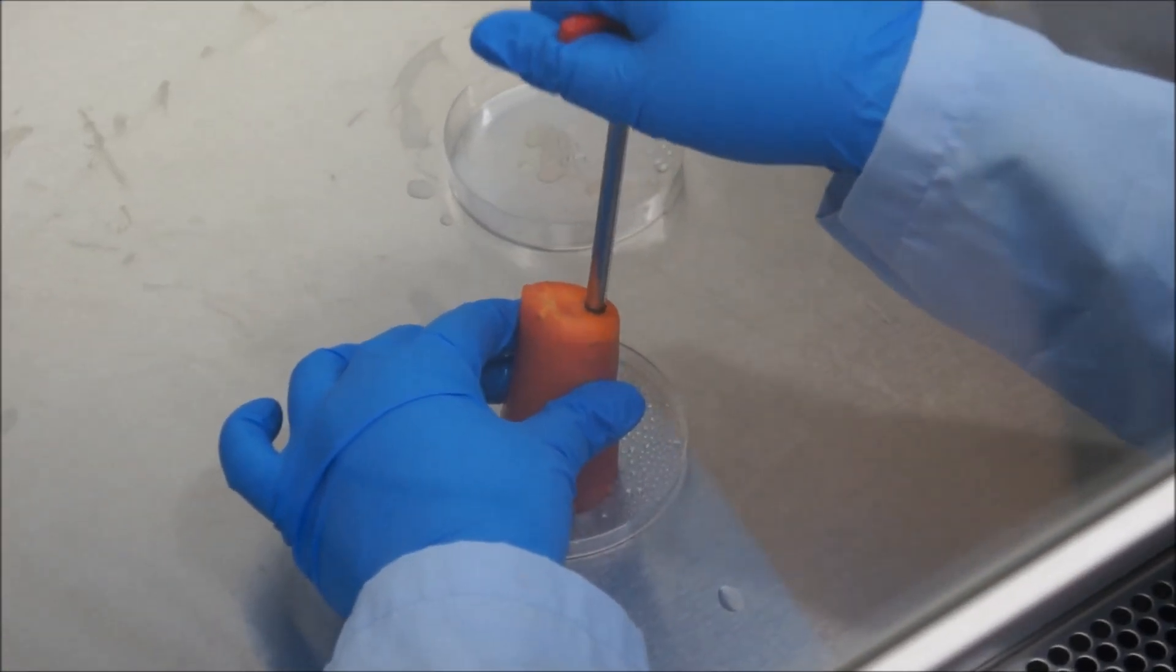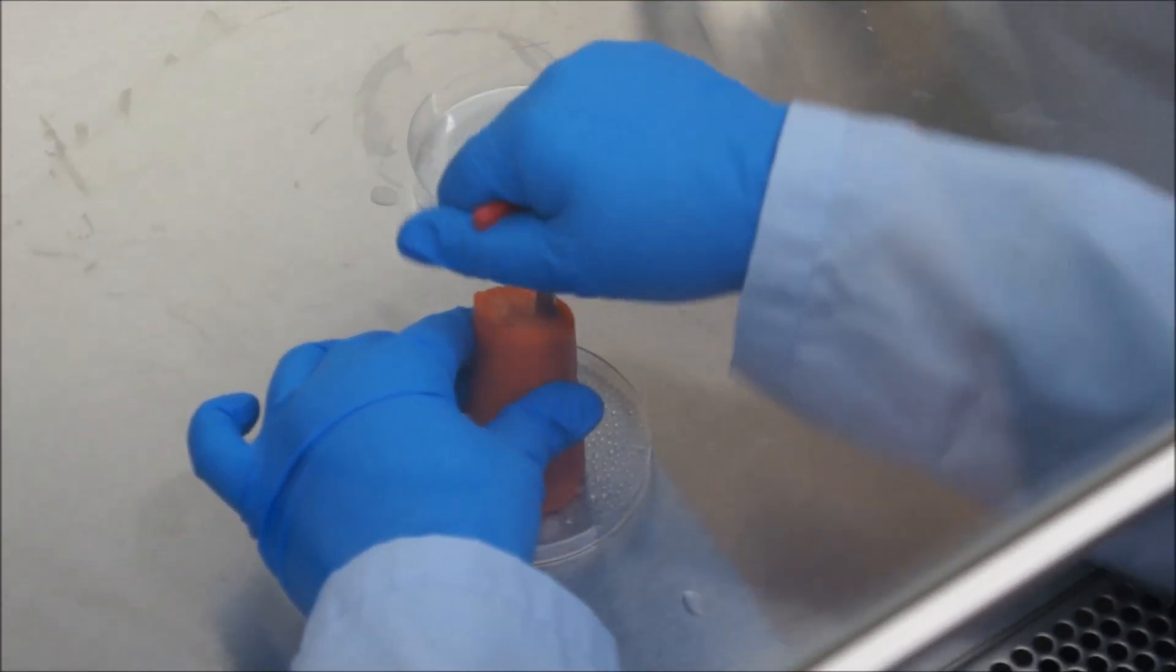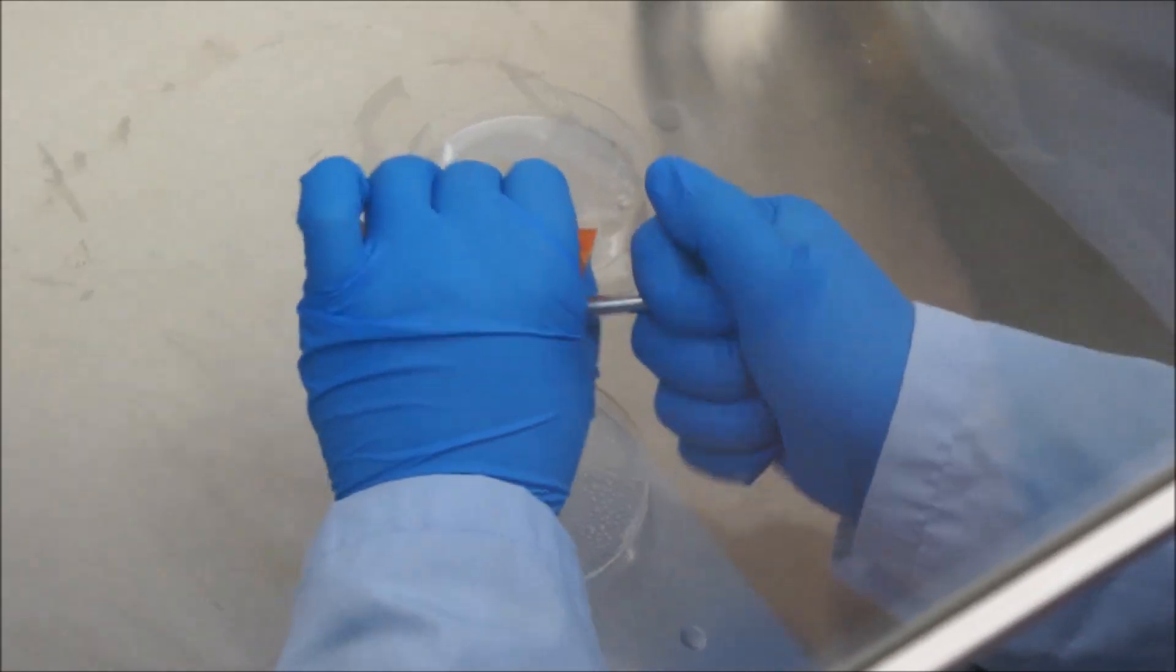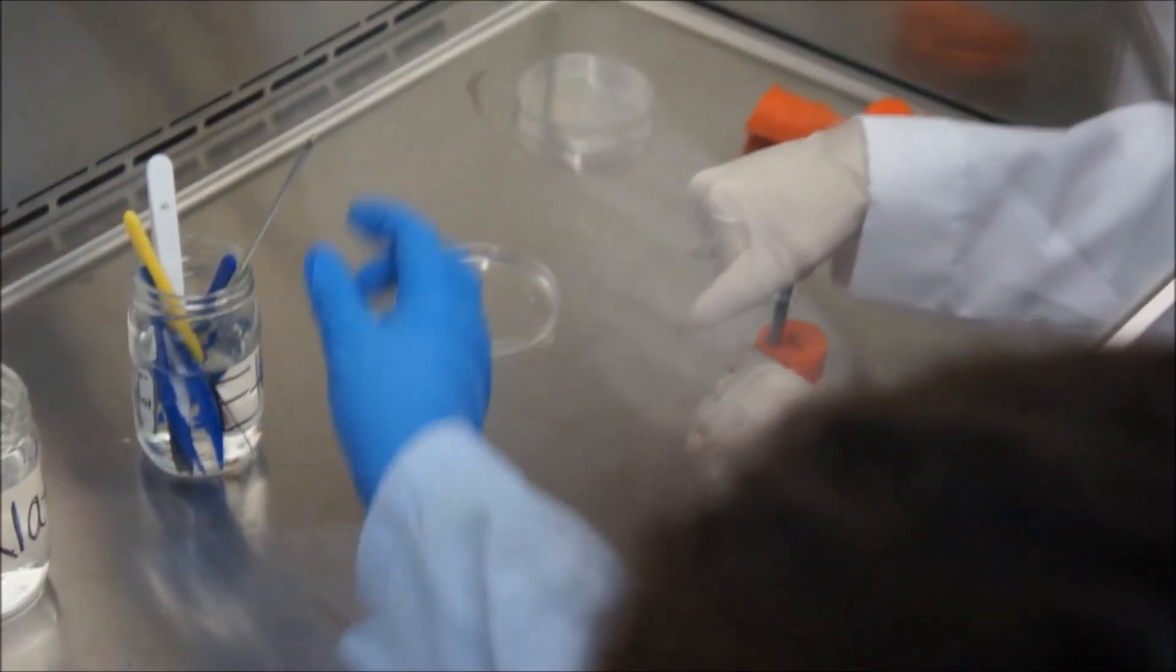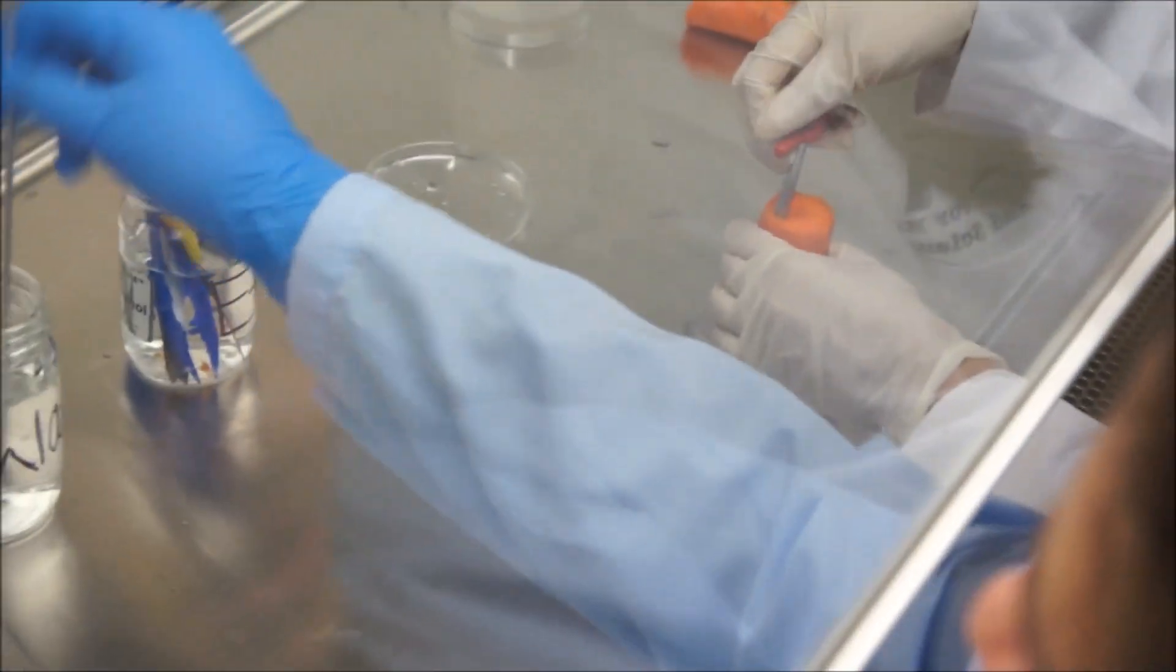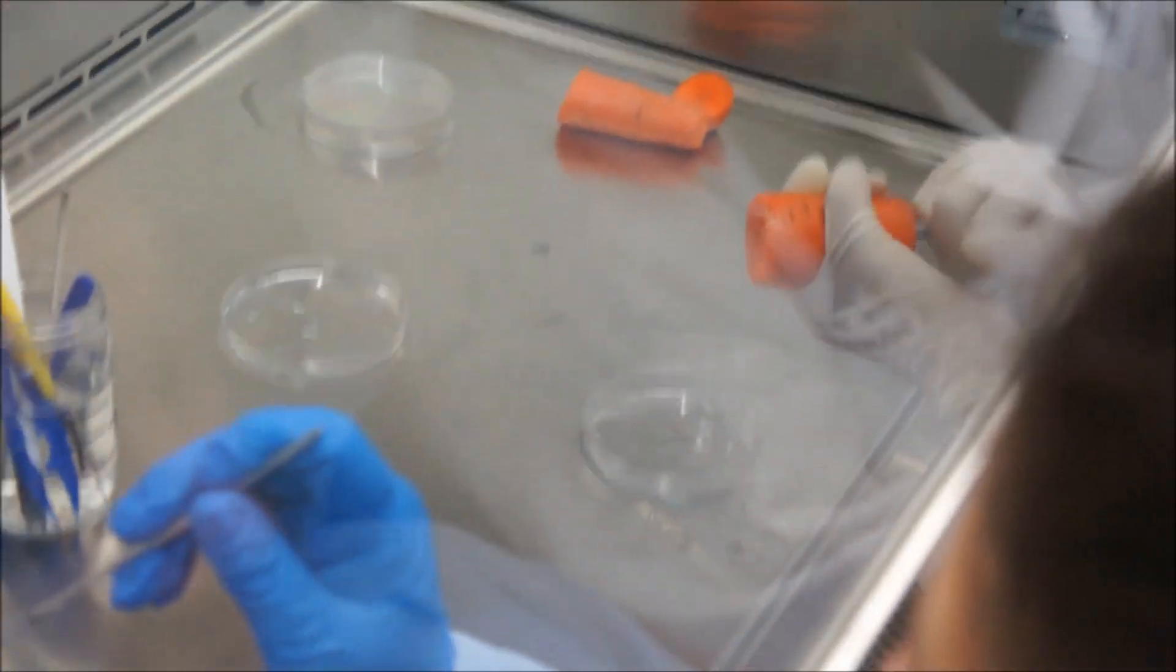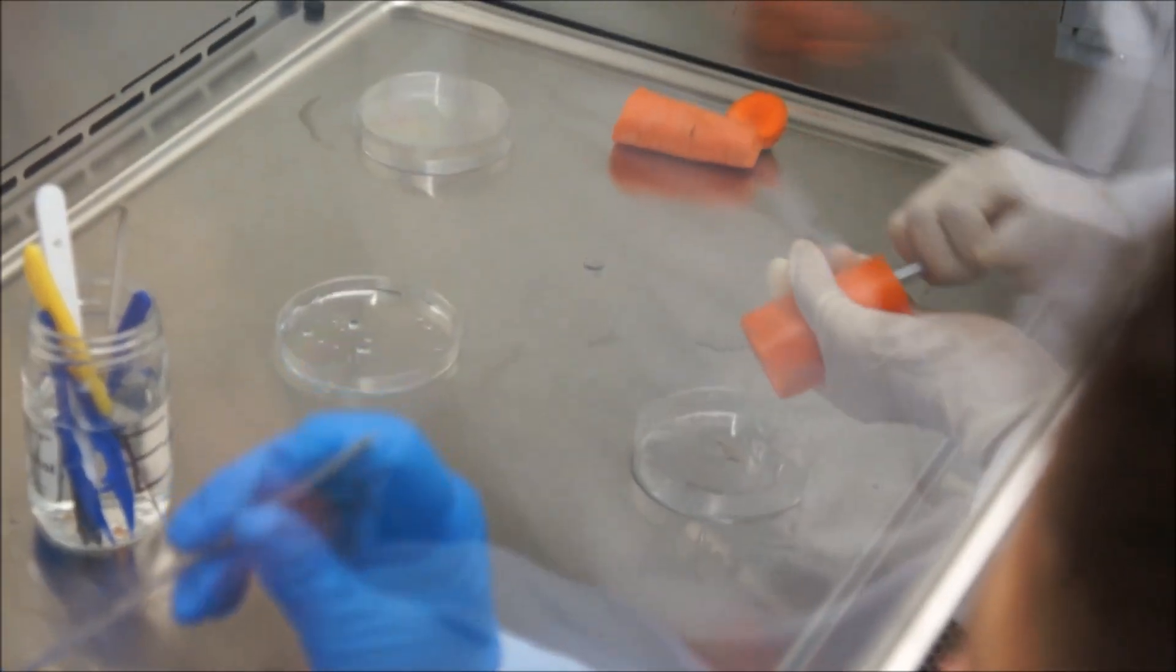While holding the carrot in place, push the cork borer into the region outside of the central core of the root. Be sure the borer goes all the way through the root until it is in contact with the dish. Turn the borer several times while gently pressing down to be certain the core is free. Pull the cork borer out.